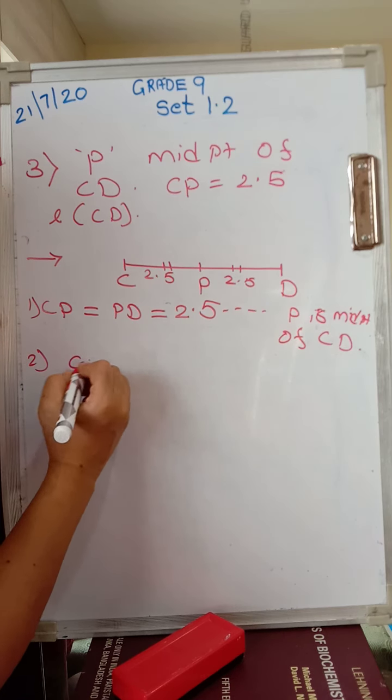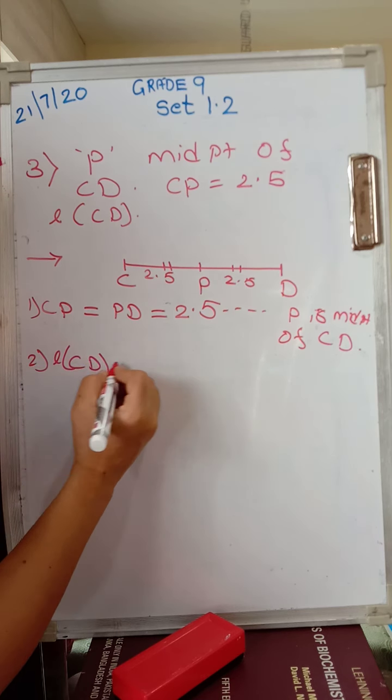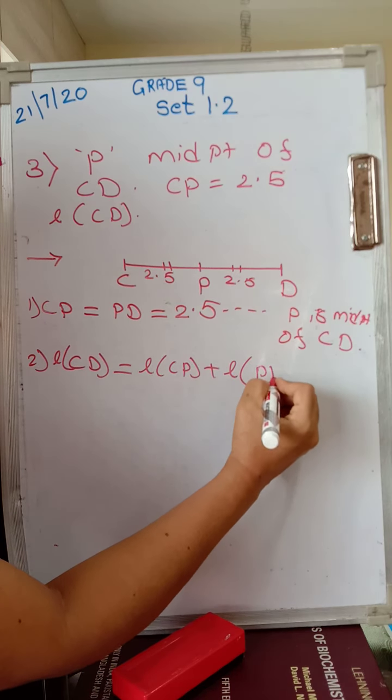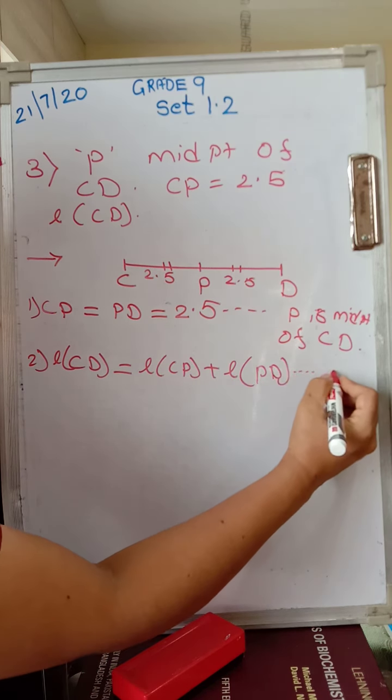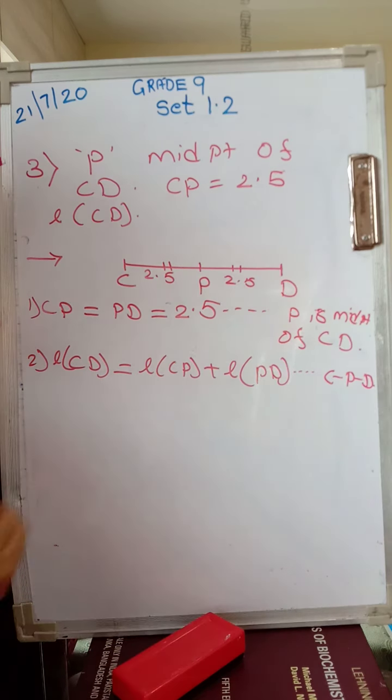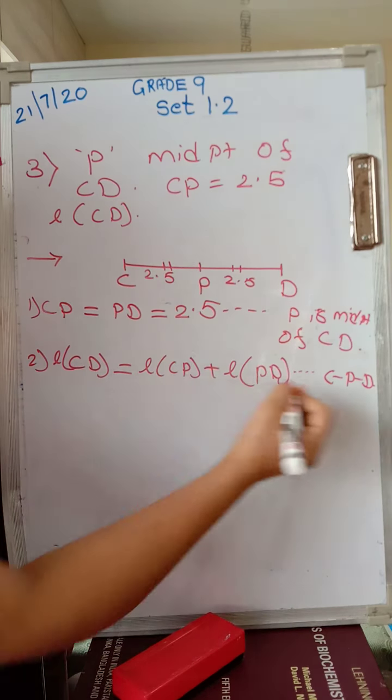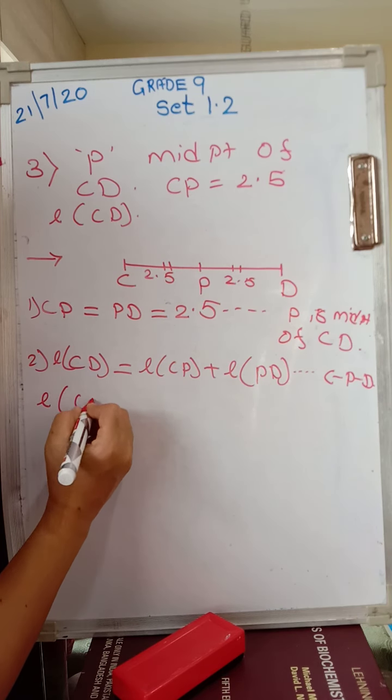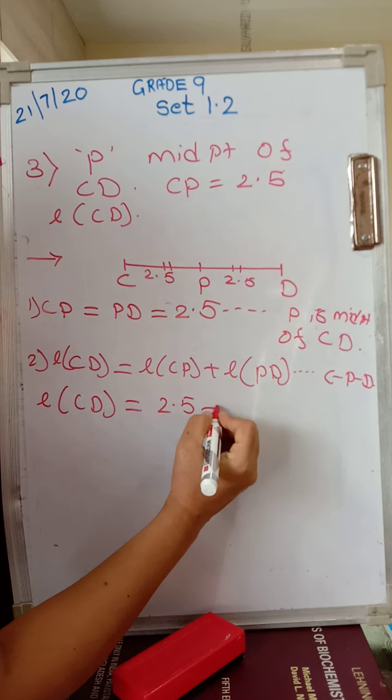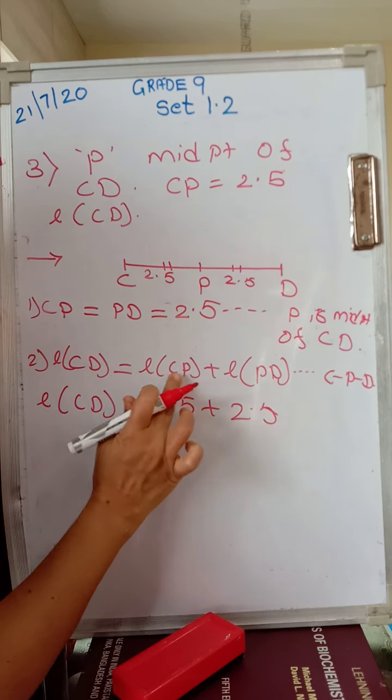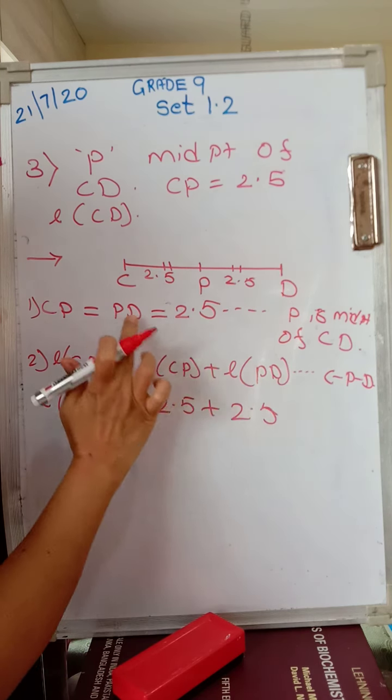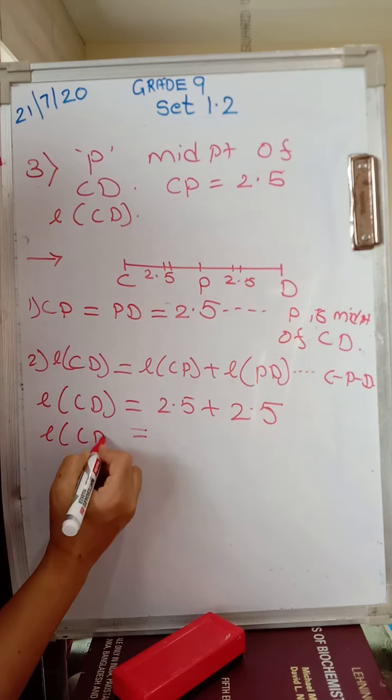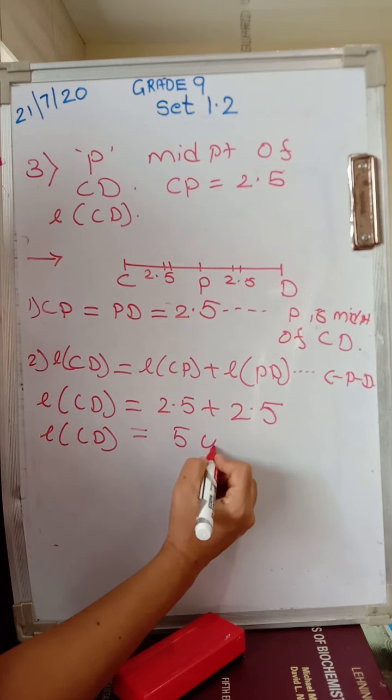Now second step, what will you do? We have to find length CD. CD is equal to length CP plus length PD. What is the reason for this? C dash P dash D. Now from this one and two, what we get? Length CD equals 2.5 plus 2.5. CP is 2.5, PD is also 2.5. So we have length CD equals 5 units.